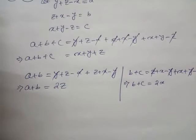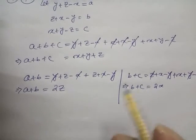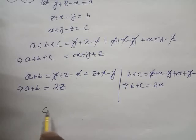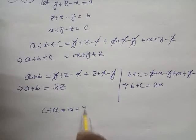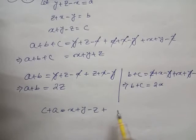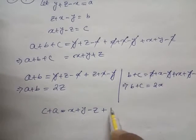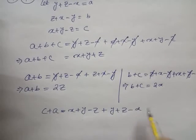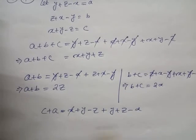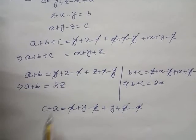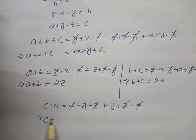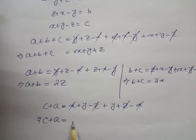Now the next one is c plus a. c plus a equals x plus y minus z plus y plus z minus x. So x and x cancel, then z and z cancel. Then c plus a equals 2y.